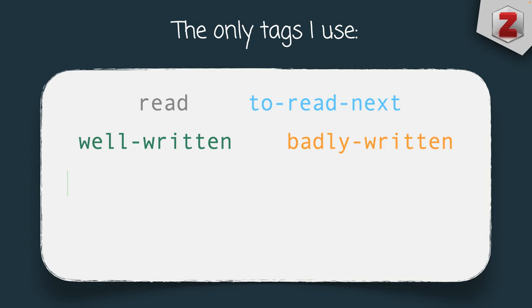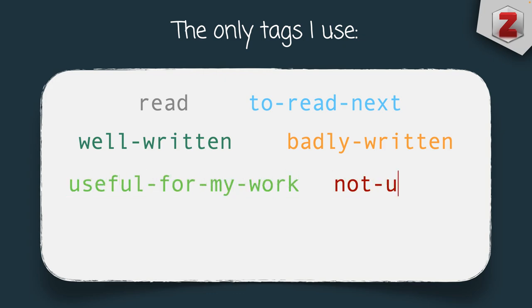I also have tags 'useful for my work' versus 'not useful'. These tags are especially helpful once I'm in the project-based sub-collection. If a paper has been flagged as useful for my work on a specific manuscript, I might want to return to it more frequently and I'd definitely cite it.